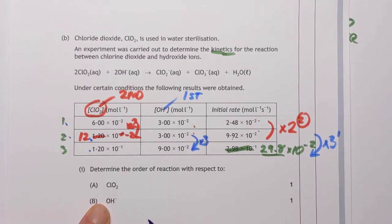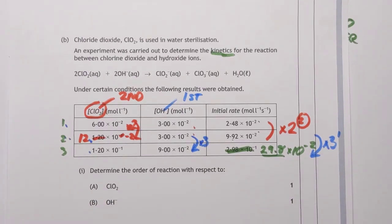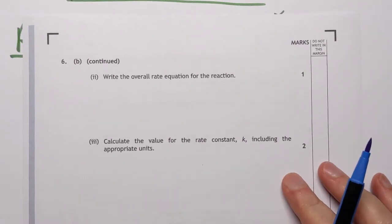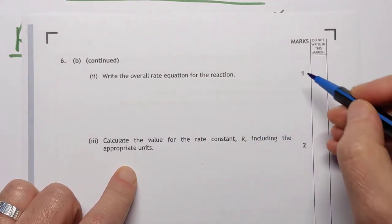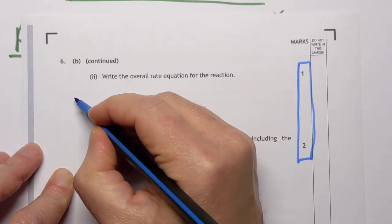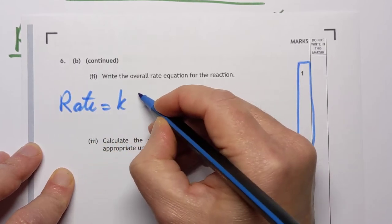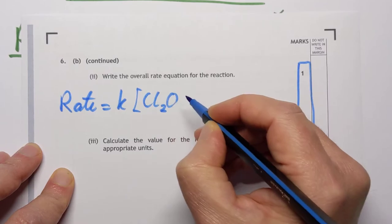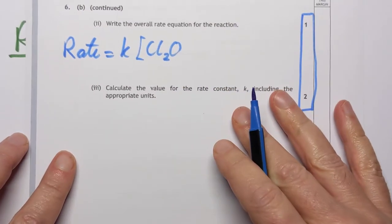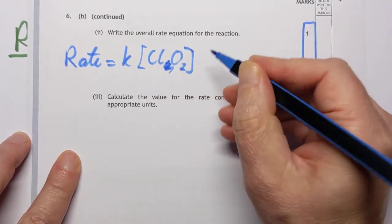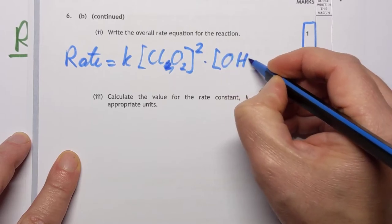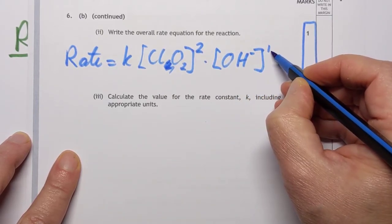Now the second part of the question asks for the overall rate equation. They often put these together as a three-mark question, but they've separated them here. We want the overall rate equation: rate = k[ClO₂]²[OH⁻]¹. You can choose to include the power of 1 on the hydroxide or leave it blank if you prefer.